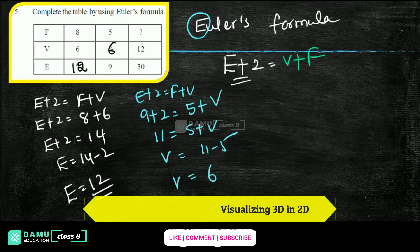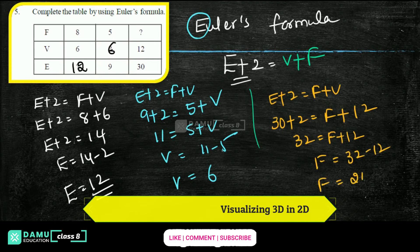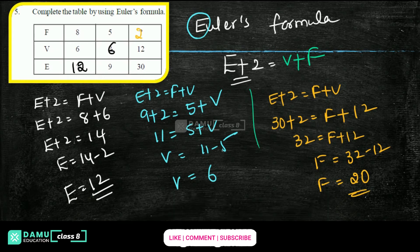For the next case: E + 2 = F + V. E is 30, so 30 + 2 = F + V. V is given as 12, so 32 = F + 12. Therefore F = 32 − 12 = 20. The number of faces is 20.